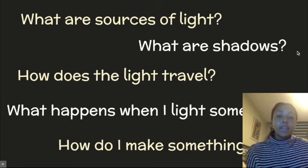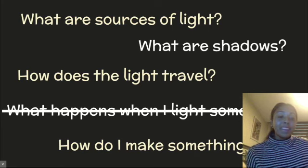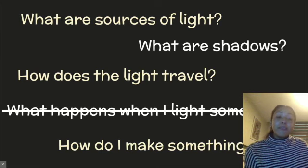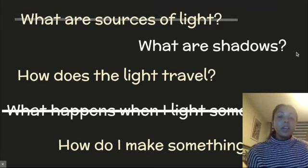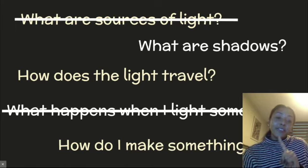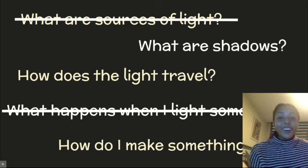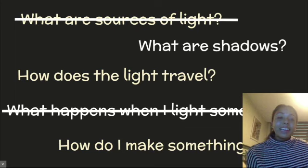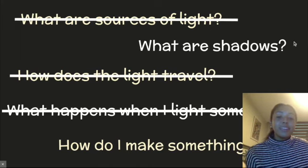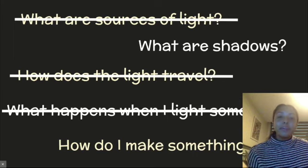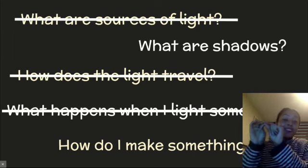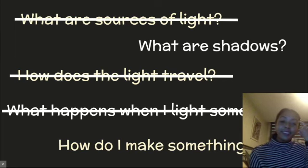We've answered a bunch of these questions already. Like what happens when I light something — remember that lesson where I shined the flashlight on those objects and you saw that they became really bright but also had big shadows behind them. We've also answered what are sources of light. We know there are two types: natural light like the sun, the moon, and the stars, and artificial light like street lamps or stadium lights — lights made by humans. And last time we answered how does light travel. So many super scientists on their Seesaw assignment realized that light travels in a straight line and drew a straight line from the headlights of the car to the tree. So smart.